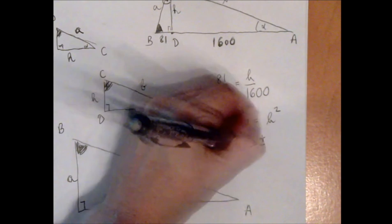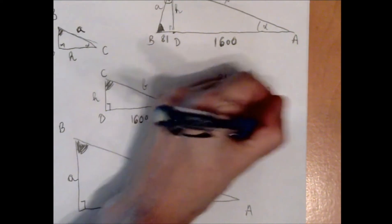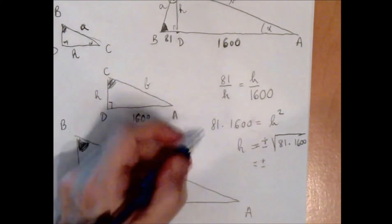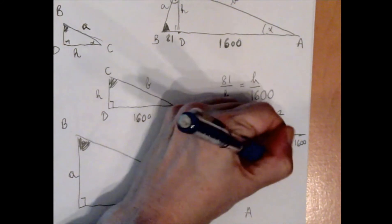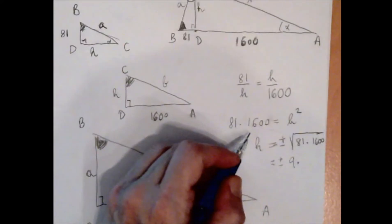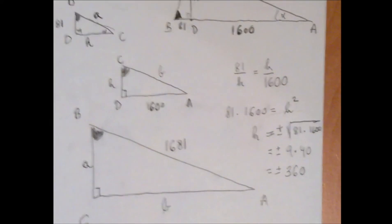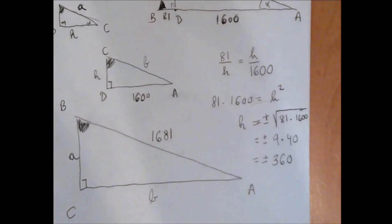So h is plus or minus the square root of 81 times 1600. The square root of 81 is 9, the square root of 1600 is 40, so h is plus minus 360, from which we very quickly eliminate the negative answer. So h is 360.